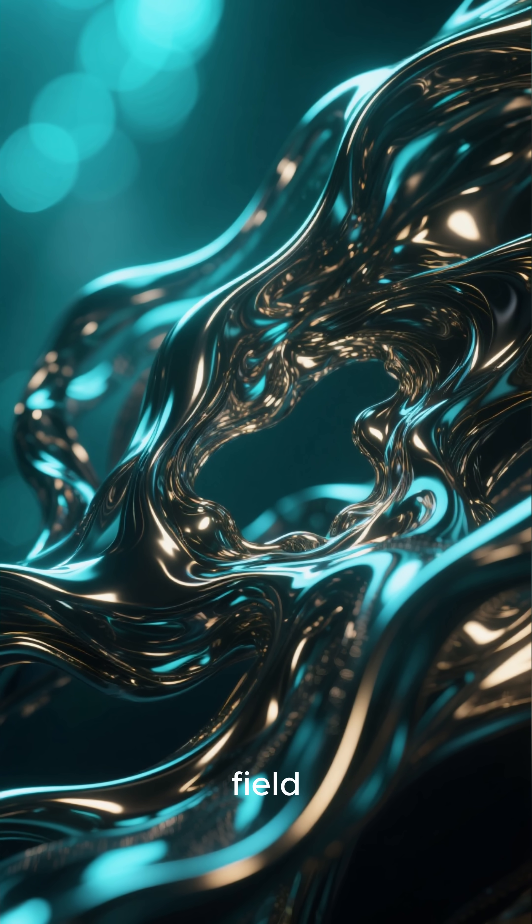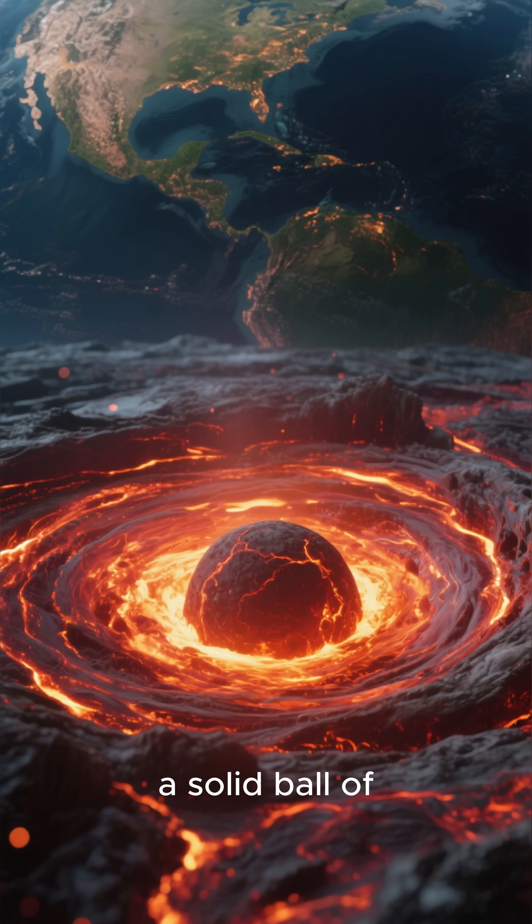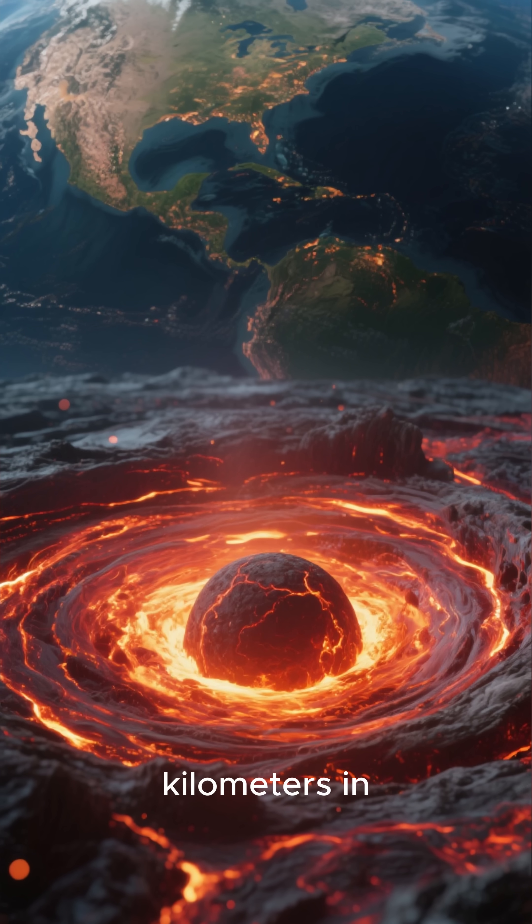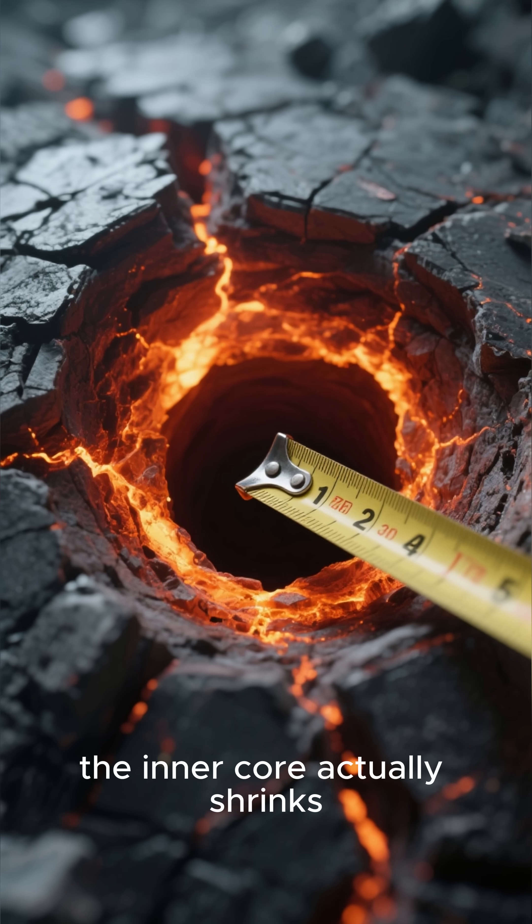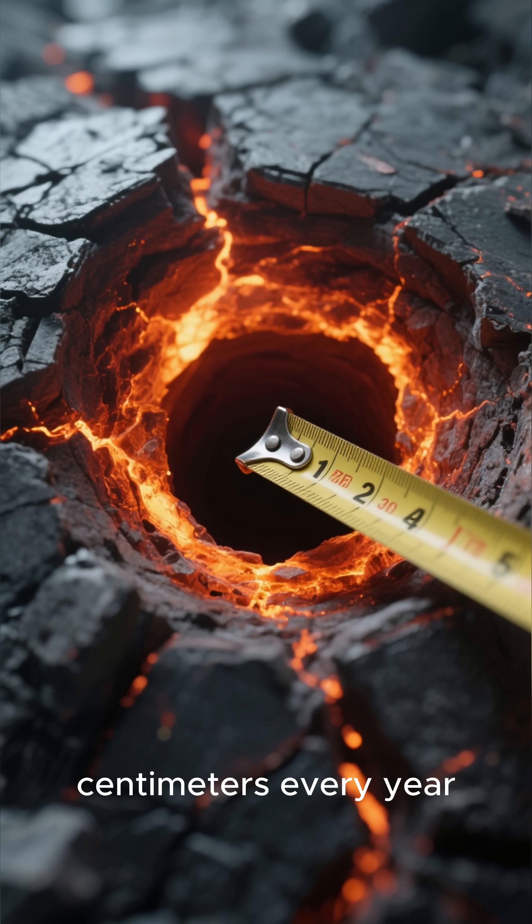This is what creates the Earth's magnetic field. The inner core is a solid ball of iron and nickel, about 1,200 kilometers in diameter. Despite the extreme heat and pressure, the inner core actually shrinks by about 10 centimeters every year.